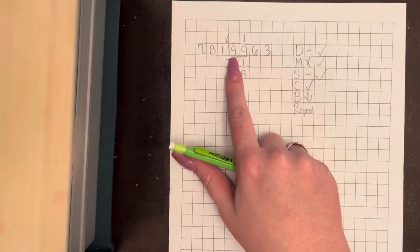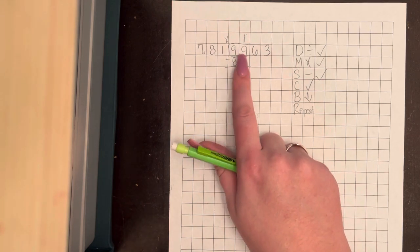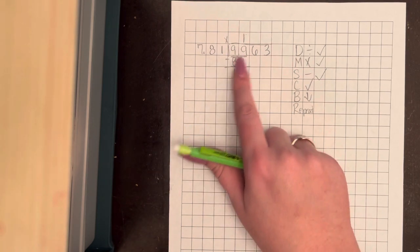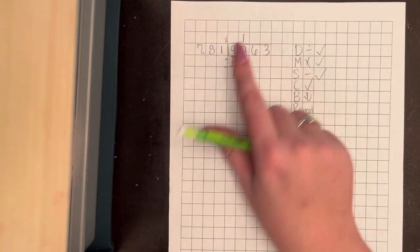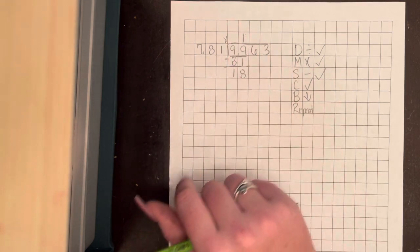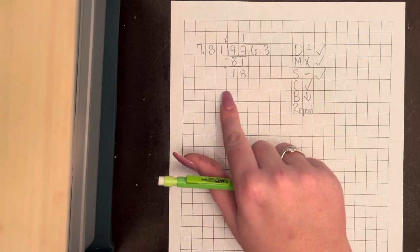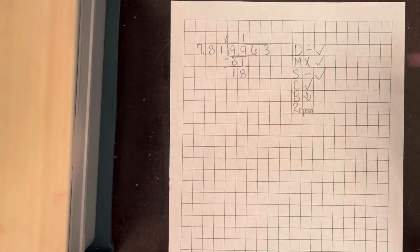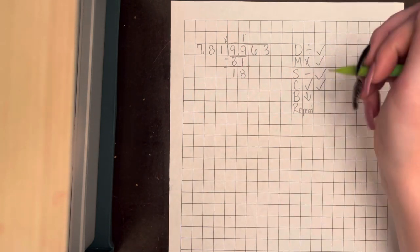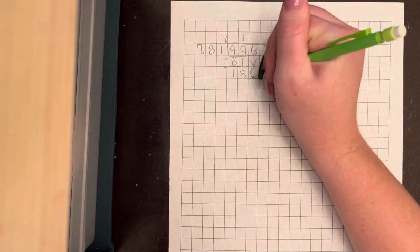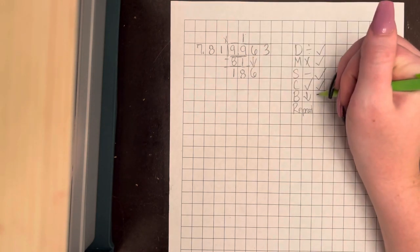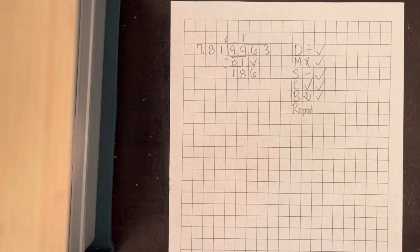Okay, now we're going to check. Could 81 go into 9? No. So we had to go to 99. 81 could go into 99 one time. 1 times 81 was 81. 9 minus 1 is 8. 9 minus 8 is 1. Okay, we're good. Now bring down just the very next number. And now we repeat. Back to divide.